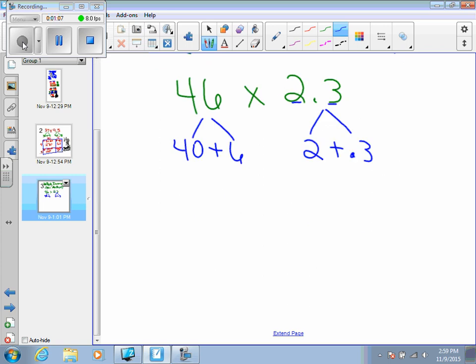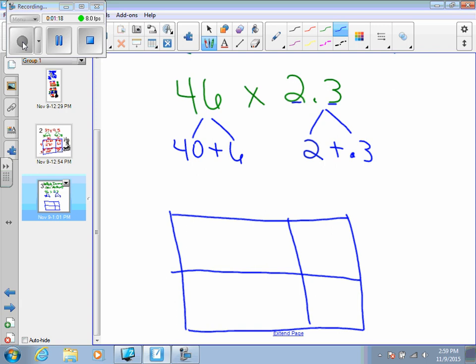Once you have that, we're going to create a box. You will tend to have the bigger numbers closer here, so that's why that box will be bigger on this side. What you're going to do is take your two expanded numbers and spread them out on the box. One's going to go on top, one's going to go on the side. It doesn't matter which one you put where. We're going to put the first one on top: 40 plus 6. Then for our second one, we're going to do 2 plus 0.3.